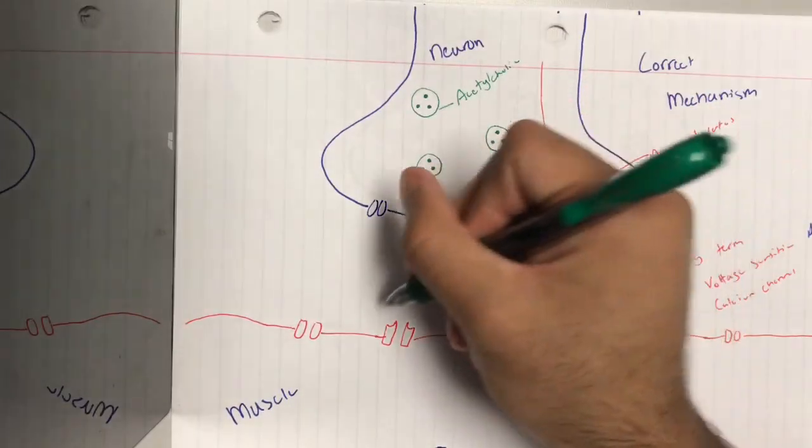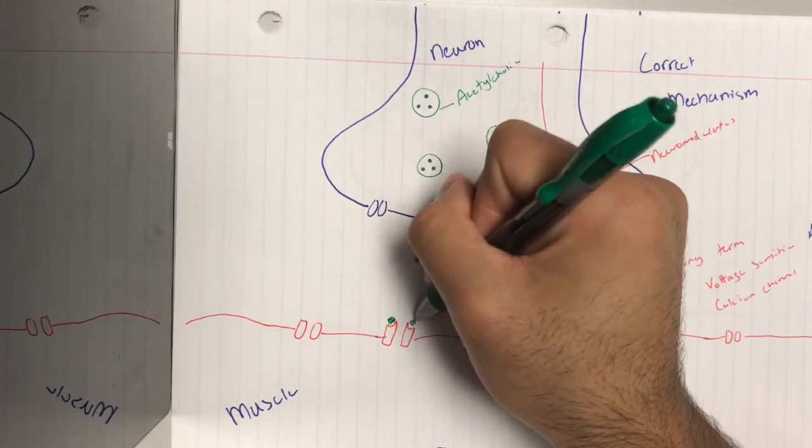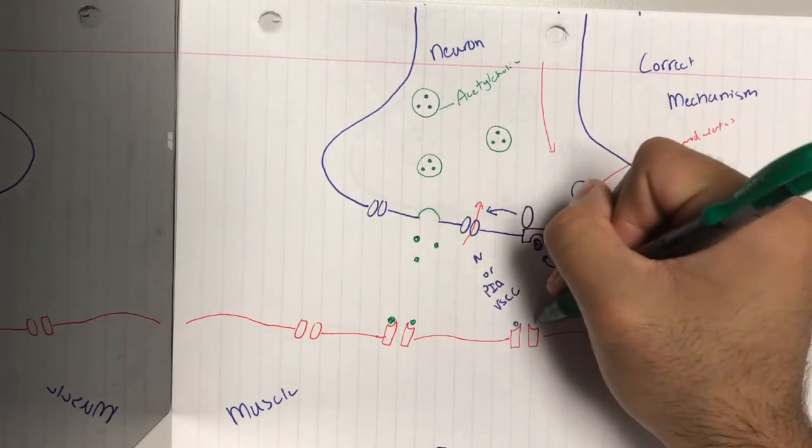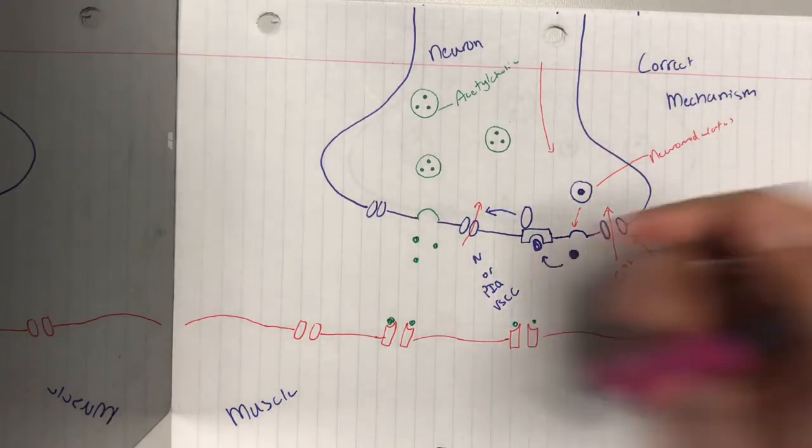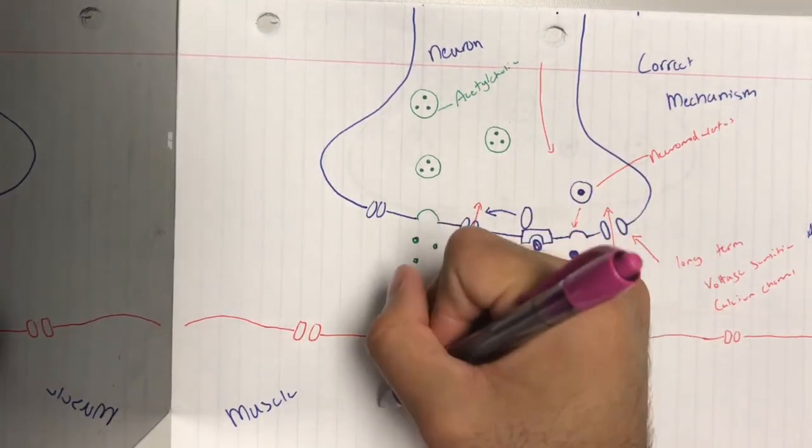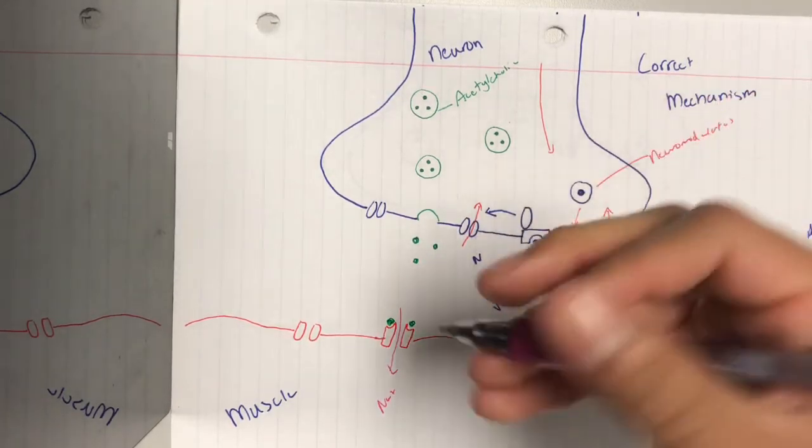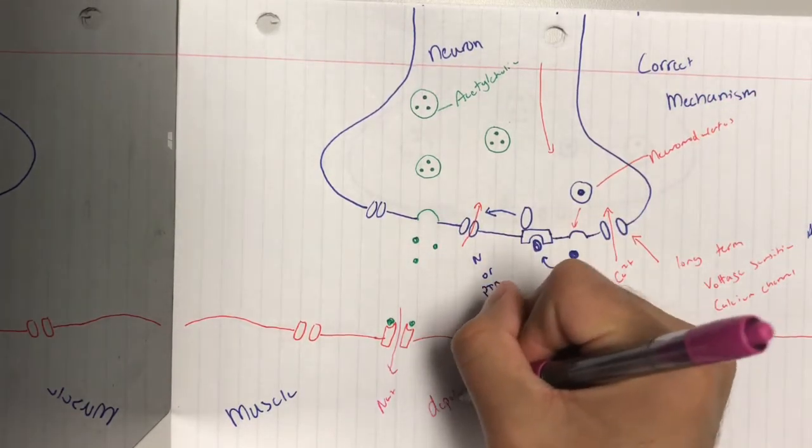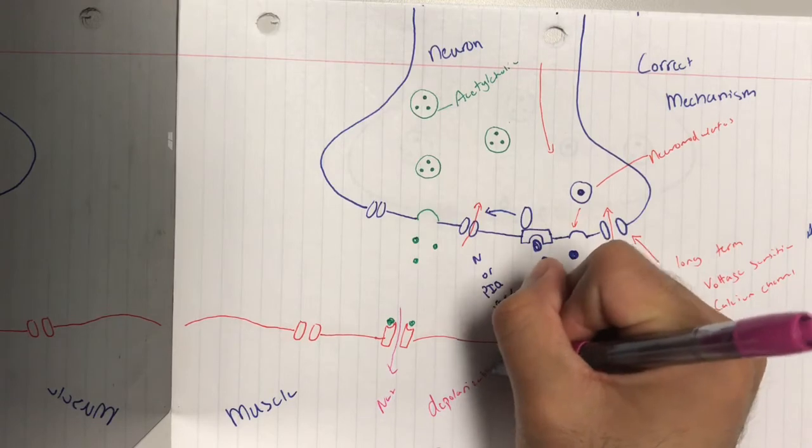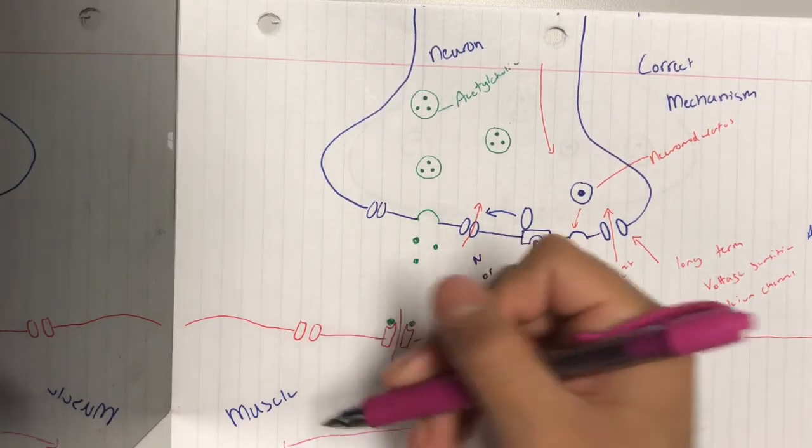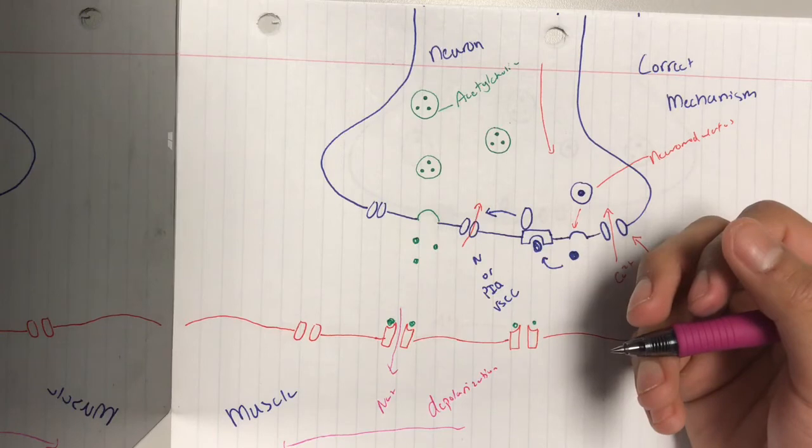to fuse with the plasma membrane and then dump out the acetylcholine into the synapse. Then, these acetylcholines will go to the ligand-gated ion channels and open them up. That's going to allow for sodium to come from the synapse to go inside, and that's going to lead to depolarization inside of the muscle cell.